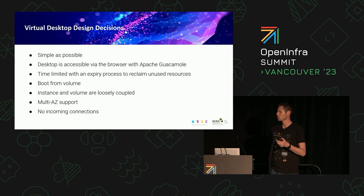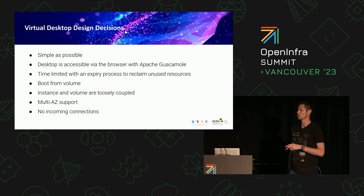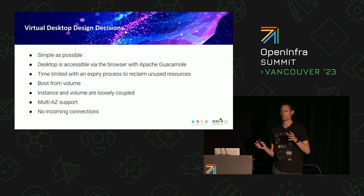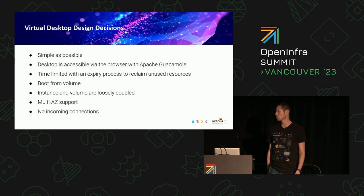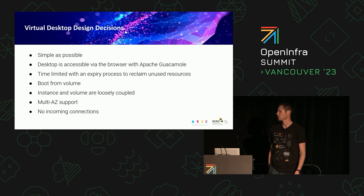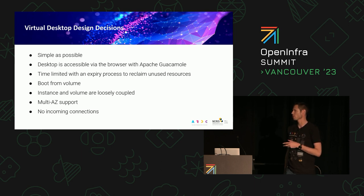We've done boot from volume, which allows a little more flexibility. The instance and volume are loosely coupled, so we can manage them differently. Multi-availability zone support was essential because we're a federation of sites all over Australia, so we needed to support users whether they're in Brisbane or Melbourne. No incoming connections was a security decision — we wanted to make sure users couldn't shoot themselves in the foot. The only access is through the Guacamole proxy.